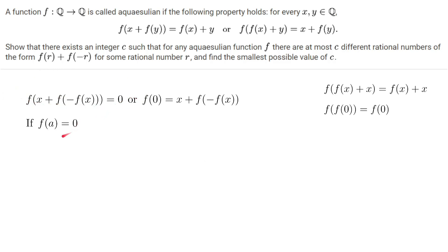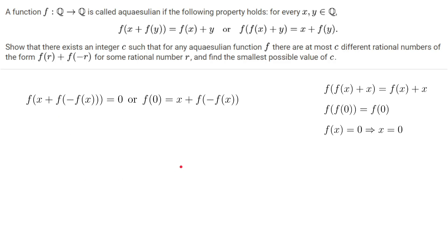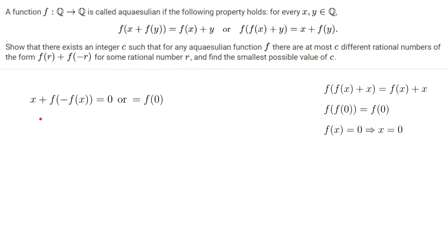The last equation is of the form f(something) = 0. So what happens if f(a) = 0? If f(a) = 0, then if we plug a into this equation, we get f(f(a) + a) = f(a) + a. And since f(a) = 0, we get f(a) = 0, f(a) = a. Therefore, if f(a) = 0, then a must be 0. Using this, we can simplify: x + f(-f(x)) = 0, or f(0). This result seems very strong.